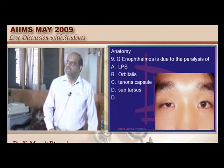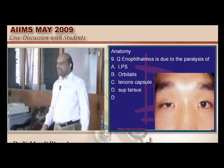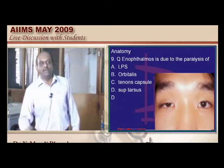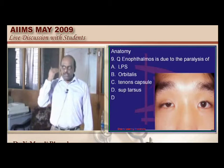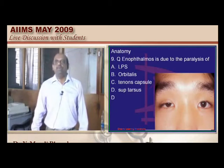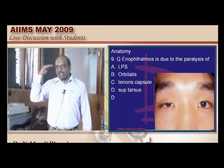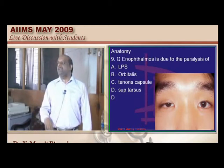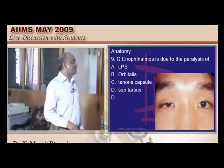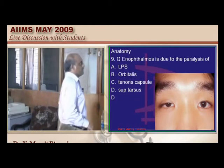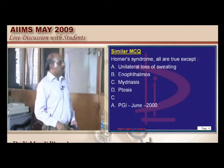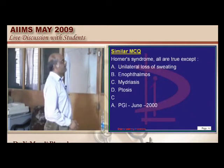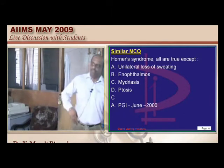Enophthalmos — Horner's syndrome is a favorite question. There is enophthalmos because the superior tarsal muscle is sympathetically innervated. If there is sympathoplegia, there is development of enophthalmos. PGI and any number of entrances have asked questions on Horner's syndrome.